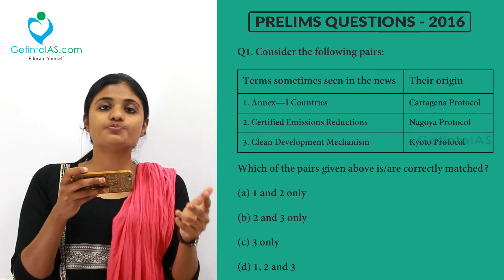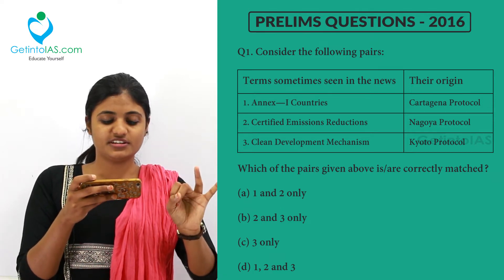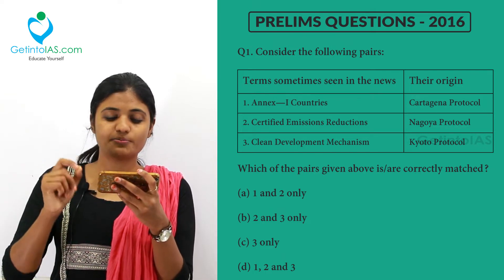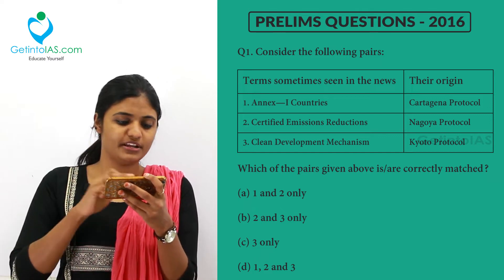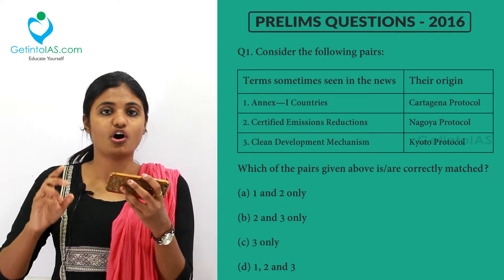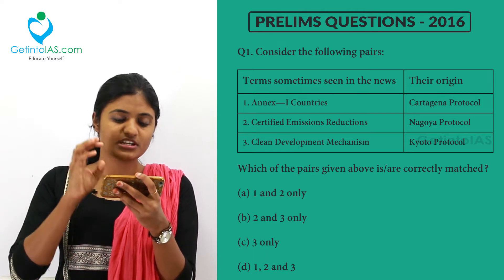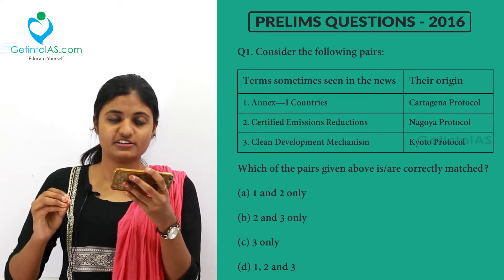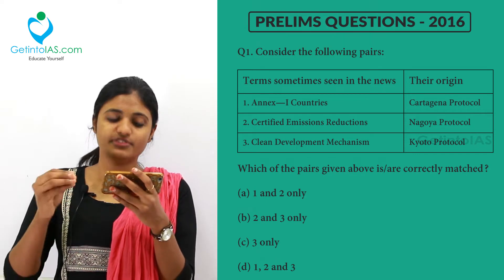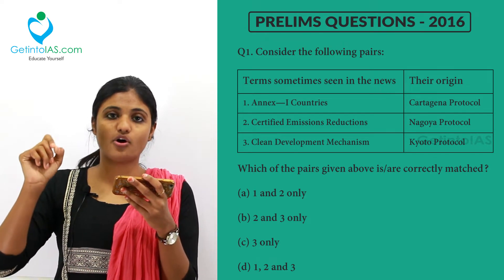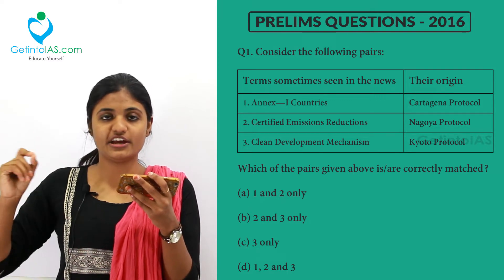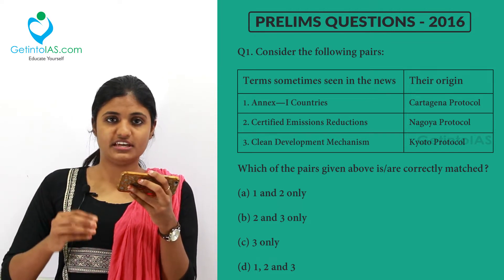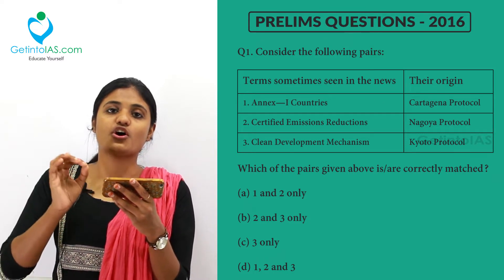There are two protocols under CBD: the Cartagena Protocol and the Nagoya Protocol. The Cartagena Protocol is a supplementary agreement to the CBD, known as the Cartagena Protocol on Biosafety. It seeks to protect biological diversity from the potential risks posed by living modified organisms resulting from modern biotechnology.